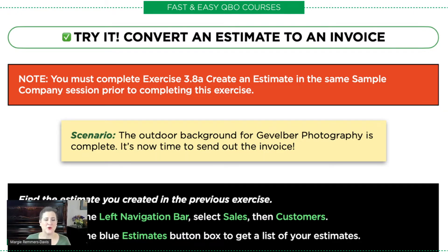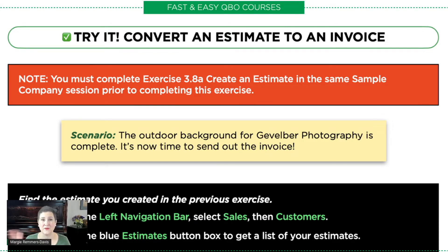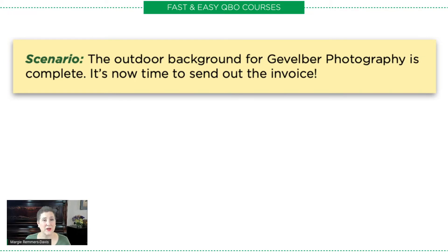So far we have sent off the estimate, converted the estimate to a purchase order, and converted the purchase order to an expense. Now what we're going to do is send that invoice off to Kate. Let's go ahead and read our scenario. If you would like a copy of this exercise or want to find out more about our courses, all the links and information are in the description.